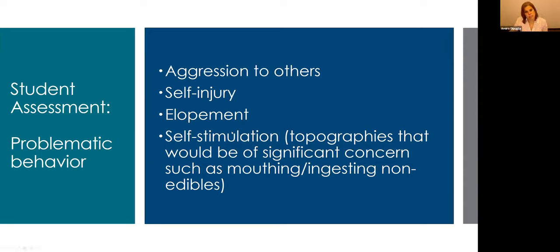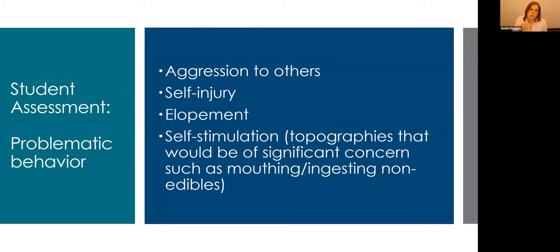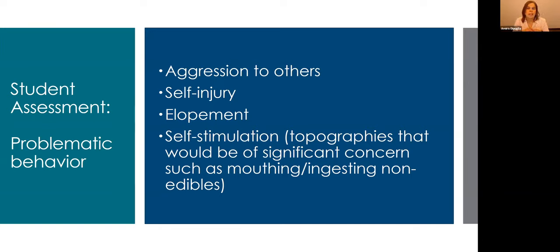Does the student have aggression, self-injurious behavior, or behaviors that cause harm to themselves or others? Elopement is a critical one — are they constantly getting up and leaving the area of instruction, or won't stay in front of the computer? And safety-wise: does the child run away from you outside? For families at home dealing with a child who elopes in public places or if they leave the door open, that should be a priority to address for the individual's safety lifelong.